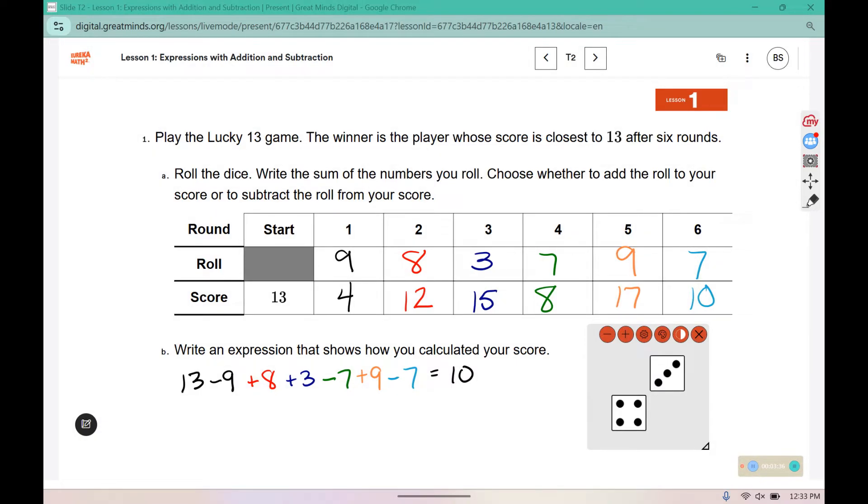If you have a dice at home or die at home, you can roll that and put in your own values to see if you get closer to thirteen than I did. It says to write an expression that shows how you calculated your score. An expression doesn't typically have an equal sign, so it would just be this piece, and then my score came out to ten.